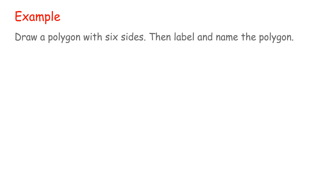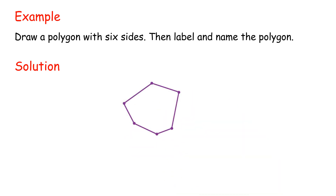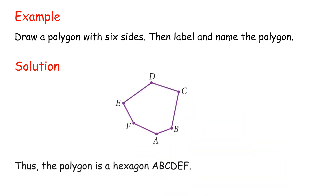Example: Draw a polygon with 6 sides, then label and name the polygon. Solution: The polygon is a hexagon ABCDEF.